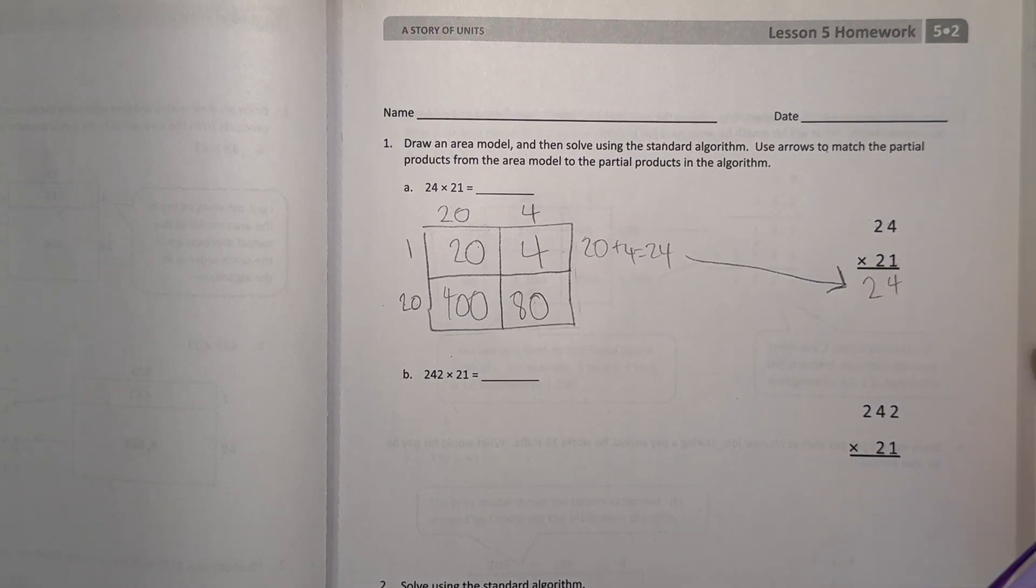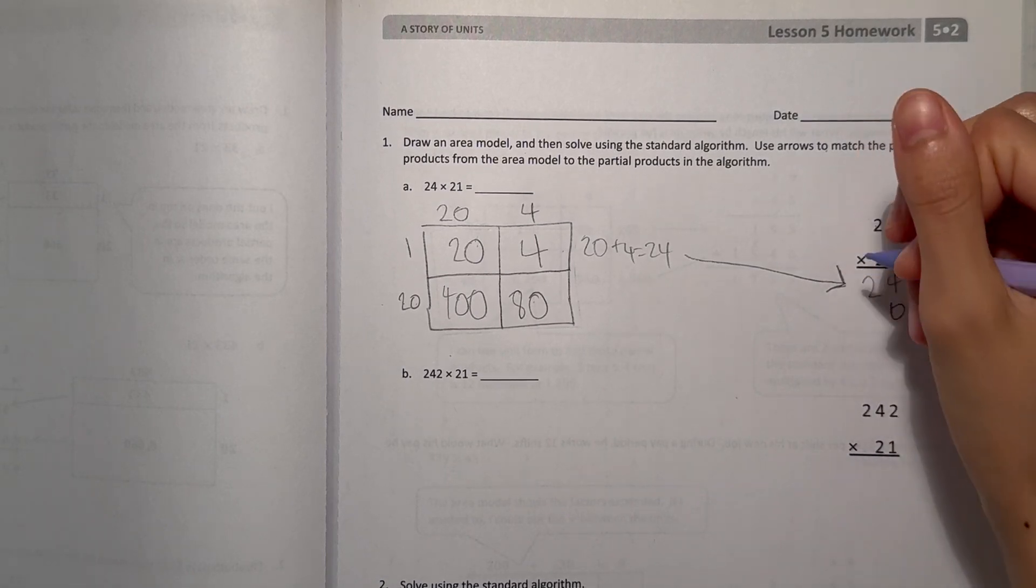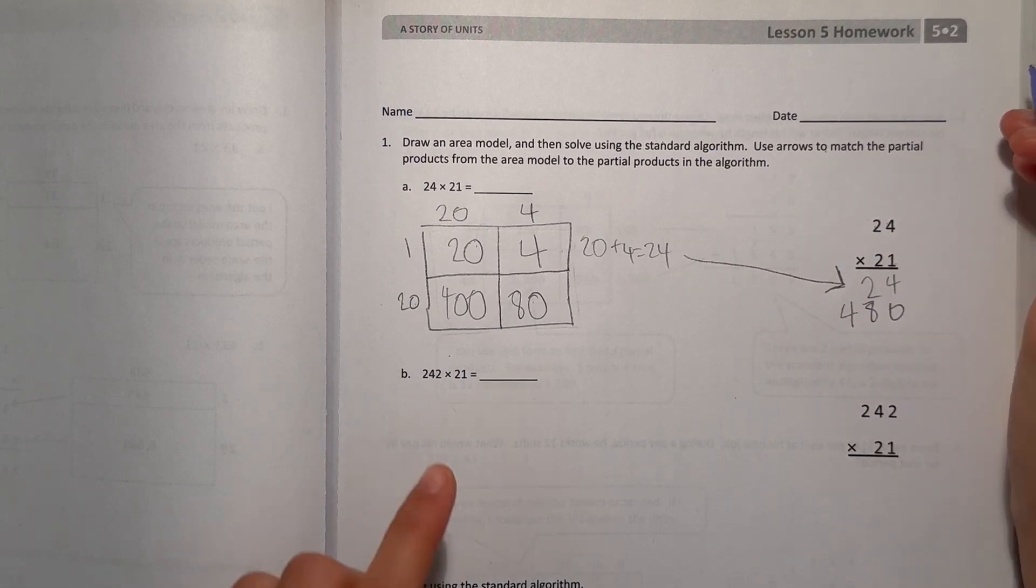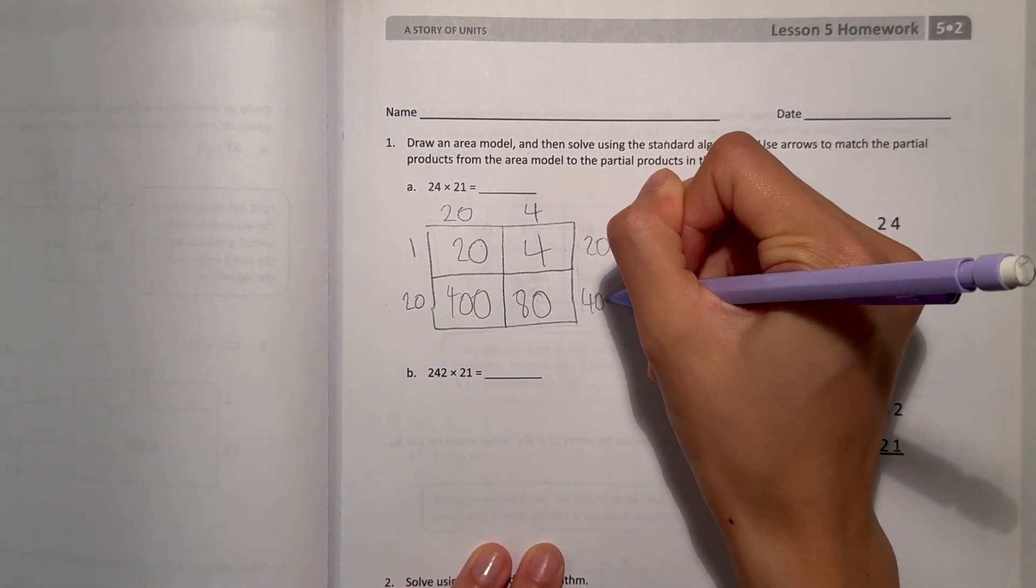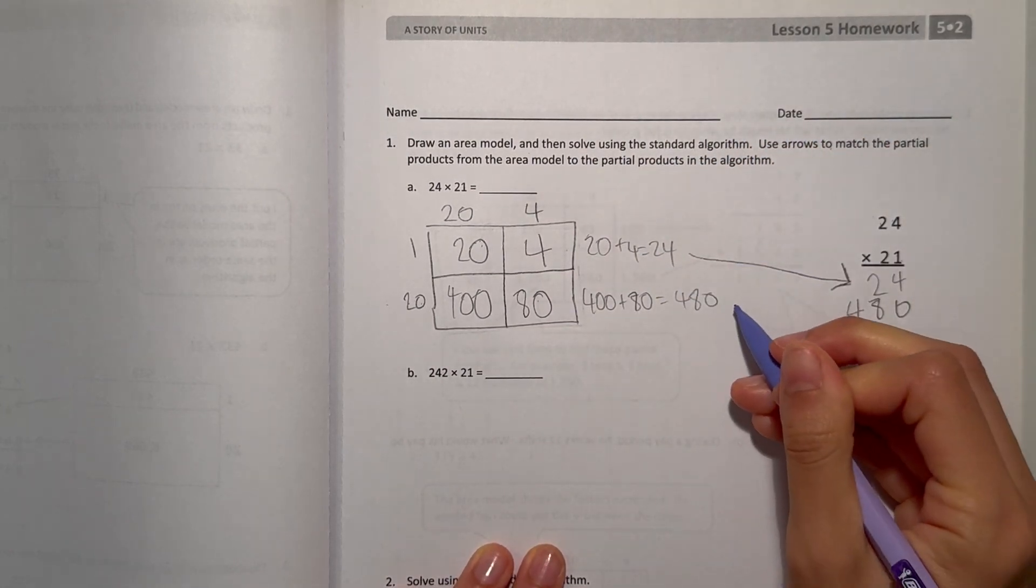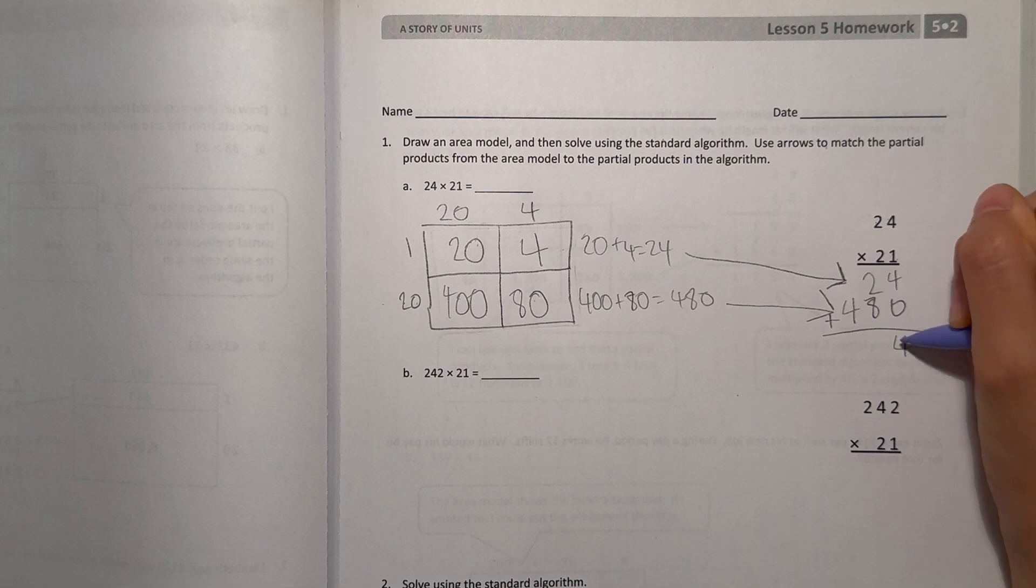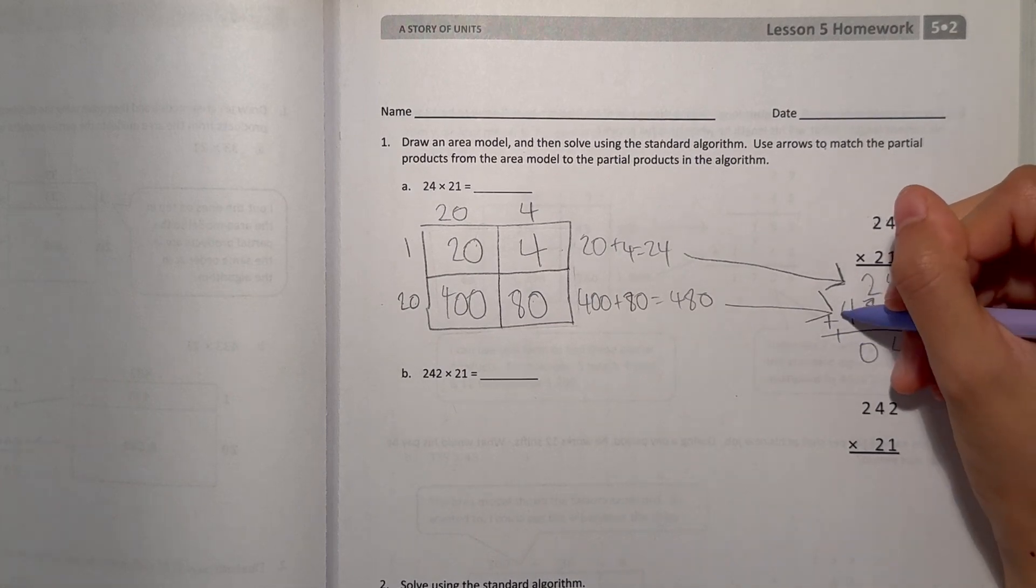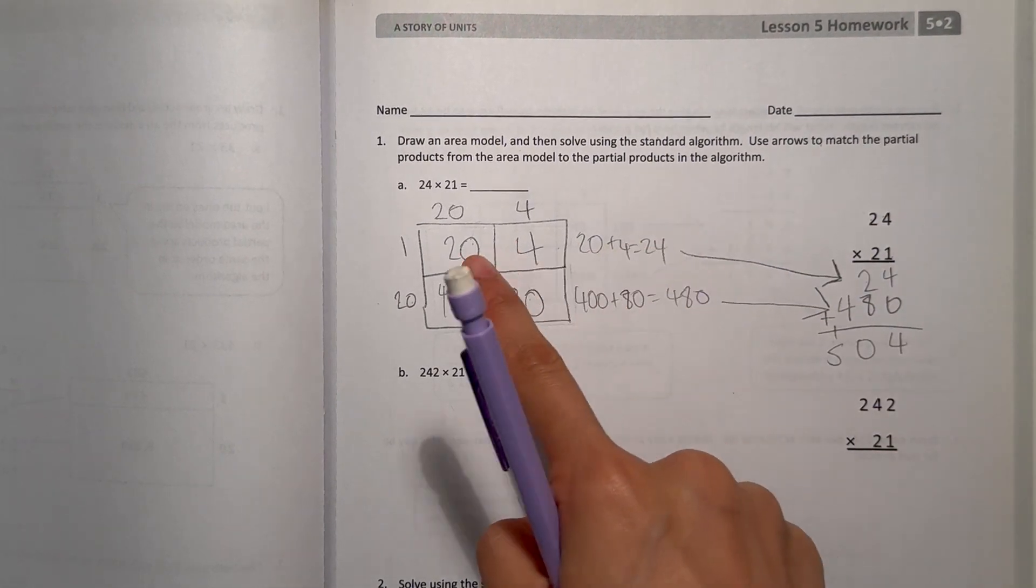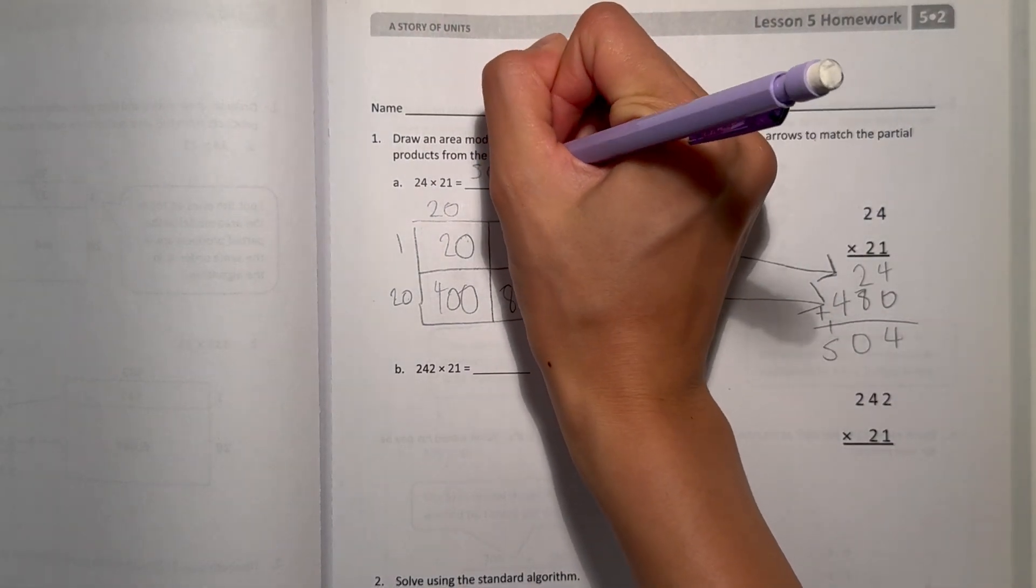Now let's look at the 2. So that is 210, so we added 0 at the end. 4 times 2 is 8. 2 times 2 is 4. Now let's look at our second row. We have 400 plus 80. That's 480. So now let's add 4 plus 0 is 4. 2 plus 8 is 10. And 4 plus 1 is 5. So 504. 24 times 21 is 504.